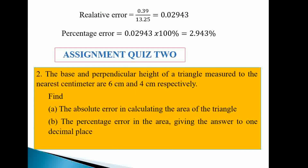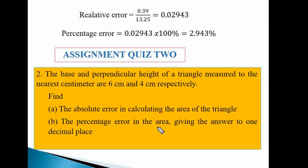Question two assignment: The base and perpendicular height of a triangle, measured to the nearest centimetre, are 6 cm and 4 cm. Find (a) the absolute error in calculating the area of the triangle, and (b) the percentage error in the area to one decimal place.